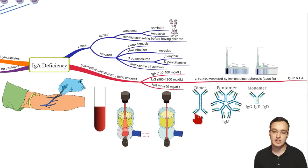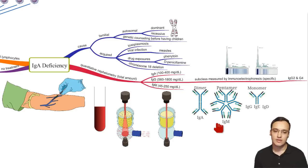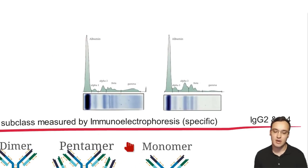Different laboratories use different reference values, but the lower limit for IgA is typically 100 milligrams per deciliter — below that indicates IgA deficiency. Structurally, IgA is a dimer, IgM is a pentamer, and the other immunoglobulins are monomers. Beyond measuring total immunoglobulin amounts, we can also use electrophoresis to measure subclasses.